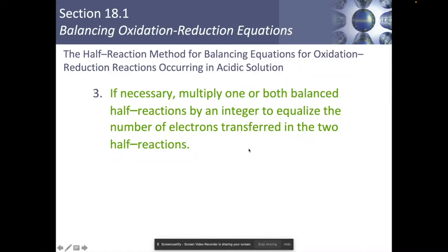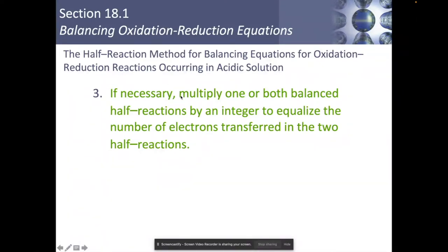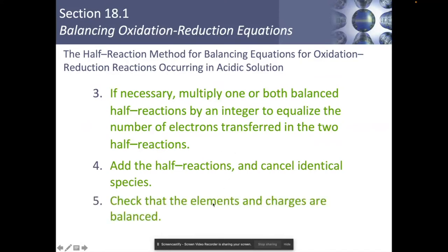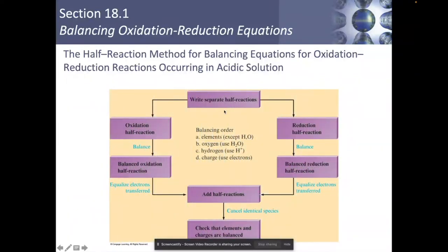But if necessary, you might have to multiply one or both half reactions by an integer to make the number of electrons transferred the same. For example, if you're losing 2 electrons in oxidation and gaining 3 in reduction, you'd need to multiply both to reach the LCM of 6 — multiply the 2-electron one by 3 and the 3-electron one by 2. Then add them together, cancel identical species, check everything is balanced, and you're done. The flow chart: separate, balance, equalize, equalize, cancel, check.